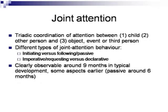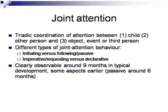Joint attention is a triadic coordination of attention between a child, another person, and an object, event, or third person. We have different types of joint attention behavior: we can initiate the behavior ourselves — pointing to something to draw the attention of someone else — but we can also follow the points or gestures of someone else, which we call following or passive joint attention. We also have imperative or requesting joint attention, where we point to something because we want it. And there is declarative joint attention, where we point to something or draw someone's attention to something we think might be of interest for that person.